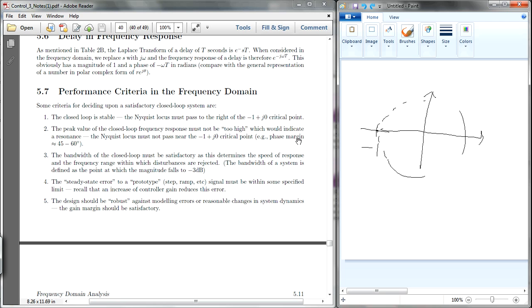Therefore, the phase margin has to be 45 to 60 degrees. In this case, it should be about this angle over here, about 60 degrees to about 45 degrees. So if you are at this point, it is still alright. Beyond this point is problematic.